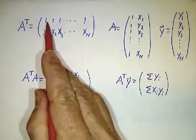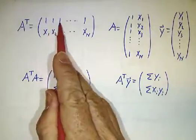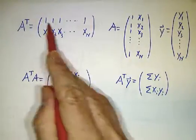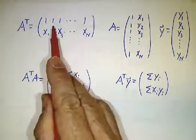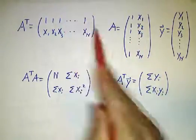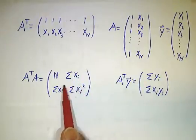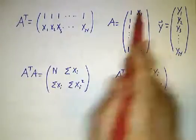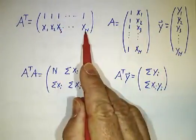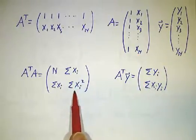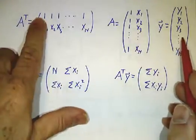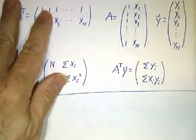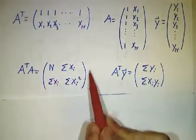Computing A^T A: the (1,1) entry is n (you add 1 n times for n data points); the (1,2) entry is the sum of the x's; likewise the (2,1) entry is the sum of the x's; and the (2,2) entry is the sum of x^2. For A^T y, the first entry is the sum of the y's and the second entry is the sum of x·y. So out of a system with potentially thousands of data points, you wind up with a 2×2 system: this matrix times (c0, c1) equals this vector.